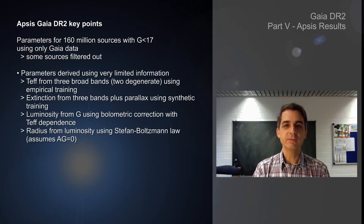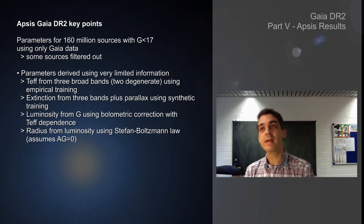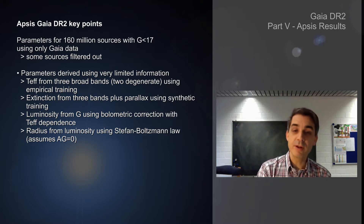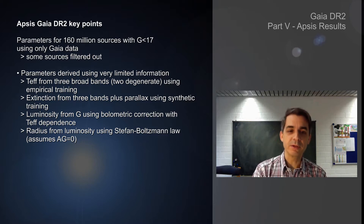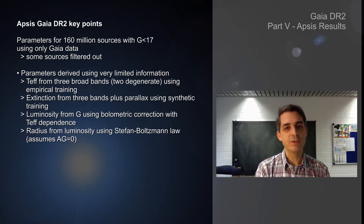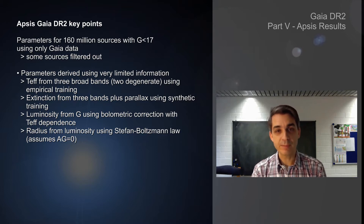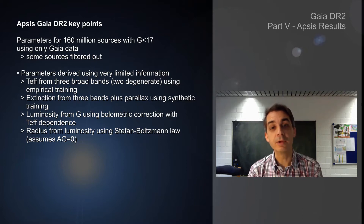These parameters have been derived using very limited information. We have effective temperatures for about 160 million stars, estimated using three broad bands — the BP, the RP, and the G band — but these are quite degenerate with one another, so effectively we only have two bands, meaning one color. Temperature has been estimated using an empirical training scheme, with algorithms trained on the Gaia photometry using stars whose temperatures were estimated from ground-based spectra.